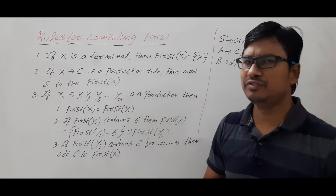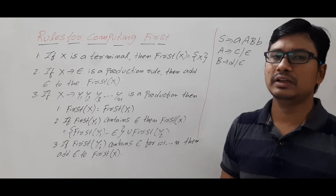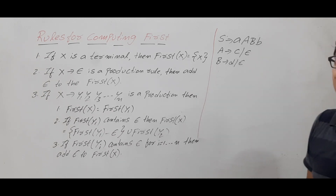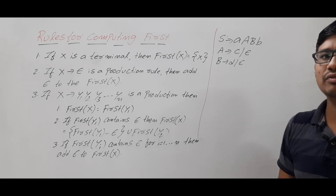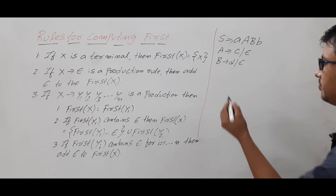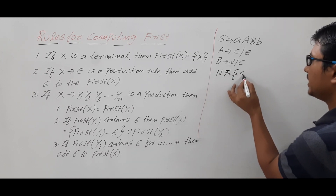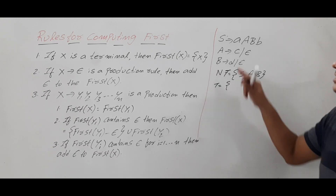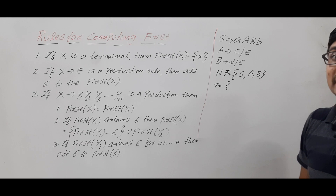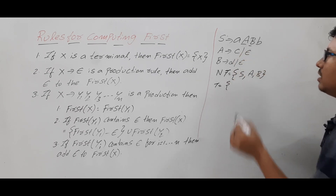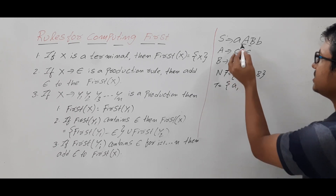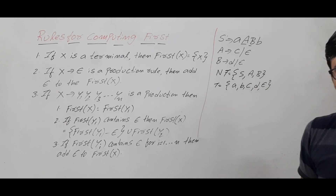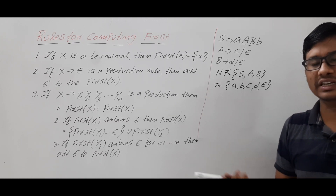To illustrate, I have taken one example. First we need to identify the non-terminals and terminals. The non-terminals are A and B. The terminals are the symbols on the right-hand side other than the non-terminals: small a, small b, small c, small d, and ε.